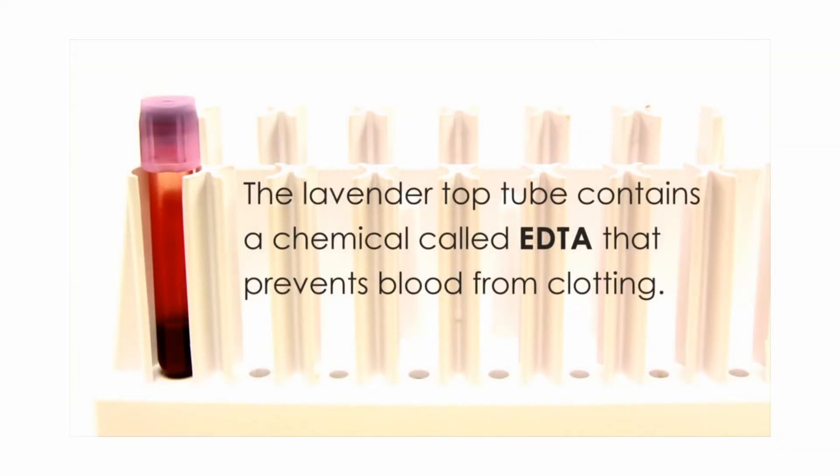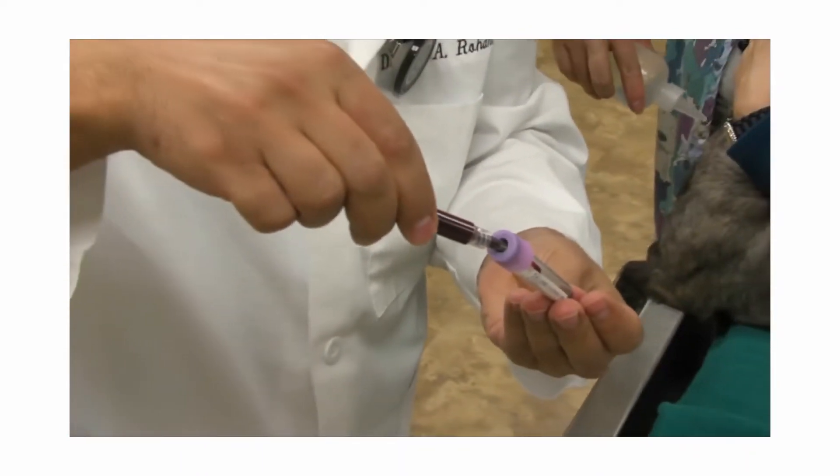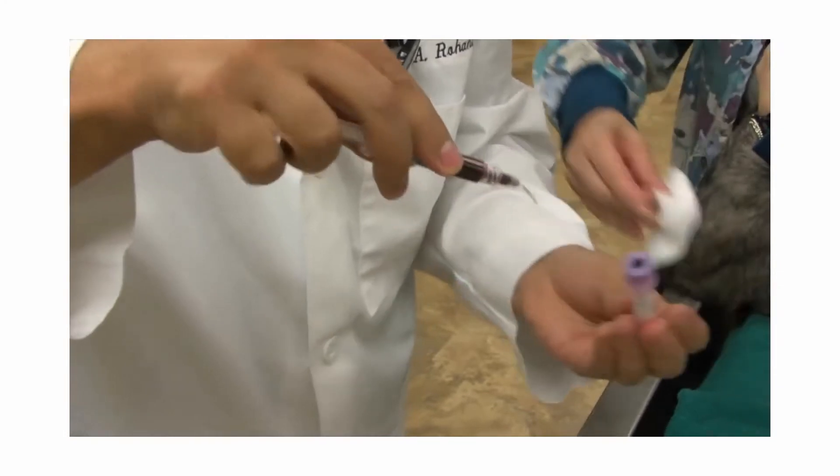The lavender top tube contains a chemical called EDTA that prevents blood from clotting. Blood must generally be placed in this tube relatively quickly, as blood will often clot within a minute or two of being drawn out of the vein.